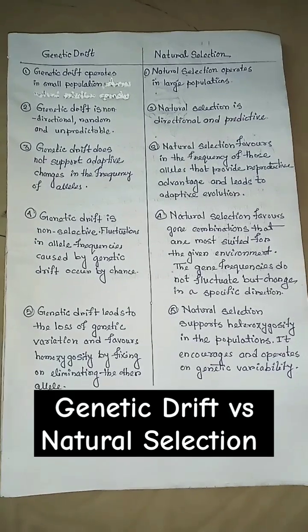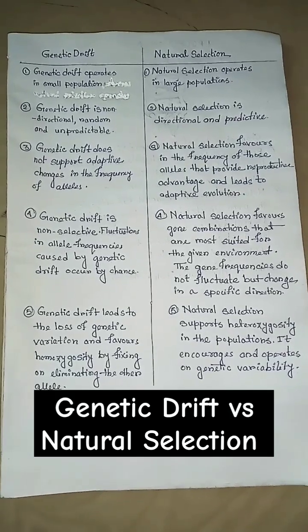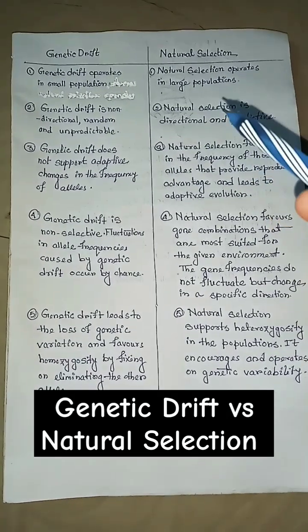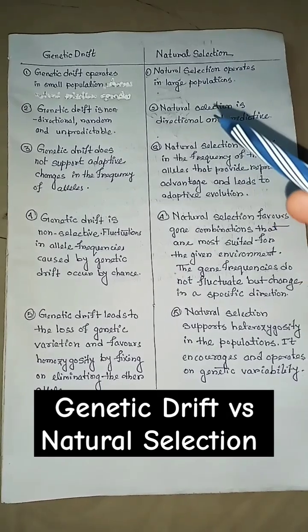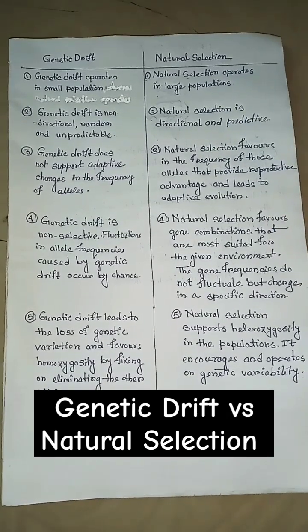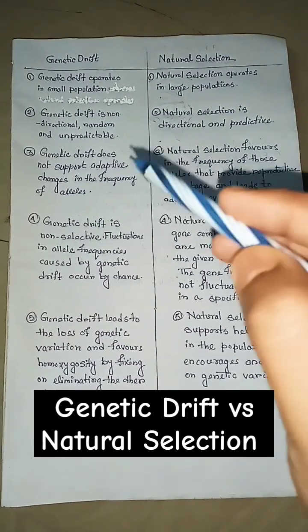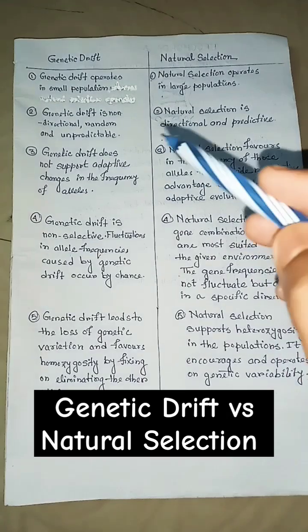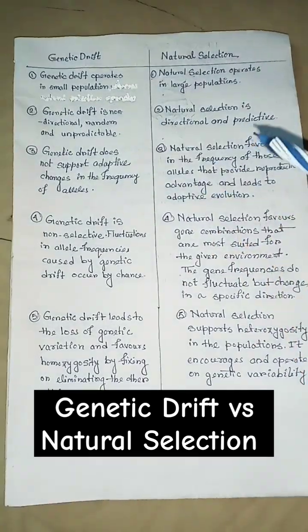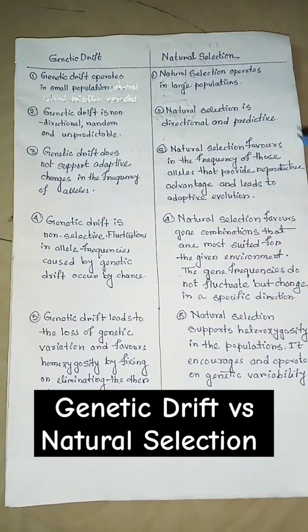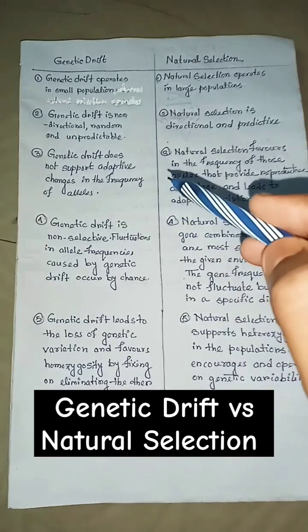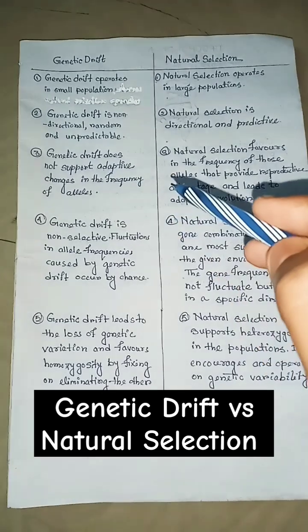Differences between genetic drift and natural selection: genetic drift operates in small populations, while natural selection operates in large populations. Genetic drift is non-directional, random, and unpredictable, whereas natural selection is directional and predictable.